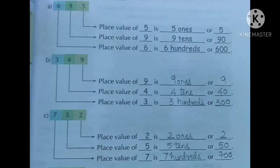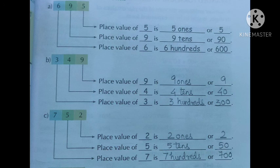Now, coming to the place values. There is a number six hundred and ninety-five. You have to tell the place values of each digit. We will start from the back. Five is in the place of ones, so we can say it is five ones or just five. Then comes nine — nine is in the place of tens, so we can say nine tens. Nine tens means nine times ten, so nine tens or ninety.